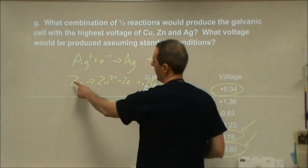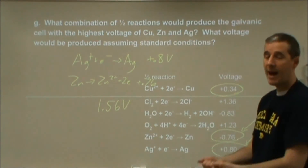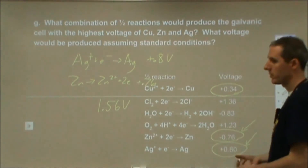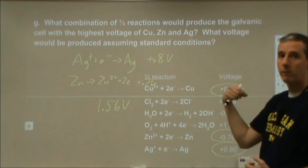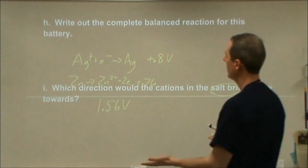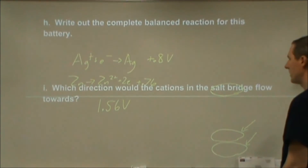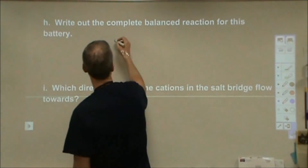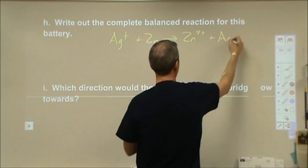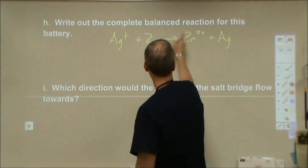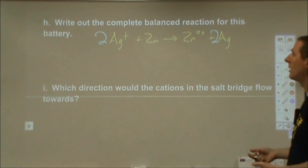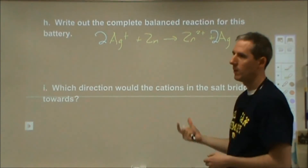This makes sense because zinc is a very reactive metal and silver ions are good at taking electrons. One is a good reducing agent, the other a good oxidizing agent — they pair well to produce a large voltage. For the complete balanced reaction: 2Ag⁺ + Zn → Zn²⁺ + 2Ag. To balance the charge, we need 2 Ag⁺ and 2 Ag, which matches 2 electrons transferred, consistent with the half-reactions.